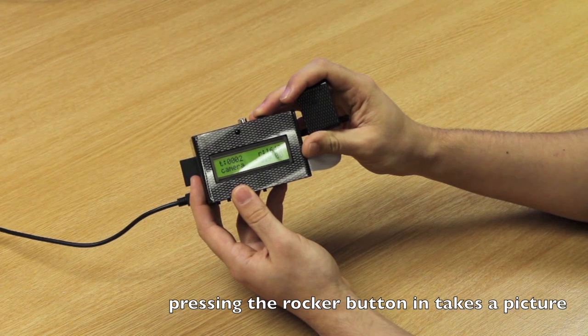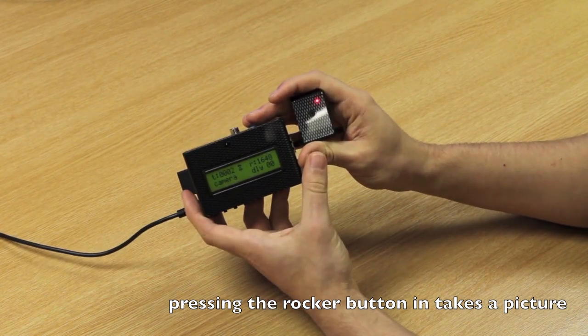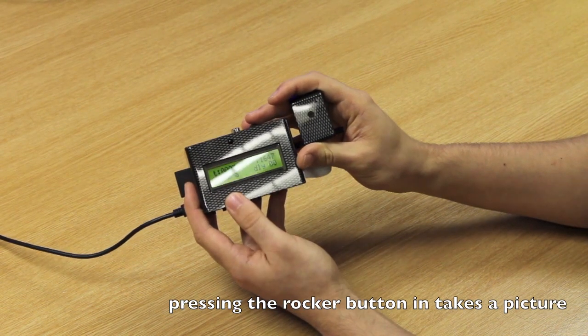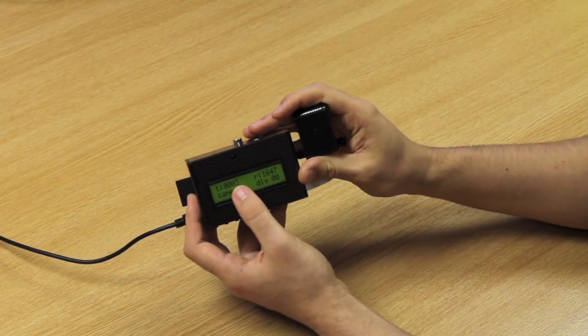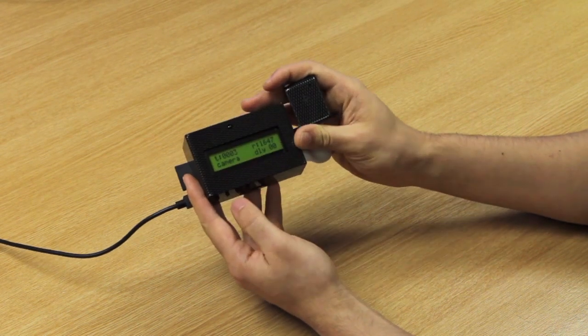If you see, we press the rocker button in and it will take a picture. We've got the red lights on the camera and the waiting symbol on the snap camera. It's taken a picture. You can see the number of pictures taken has incremented and the number left has decremented.